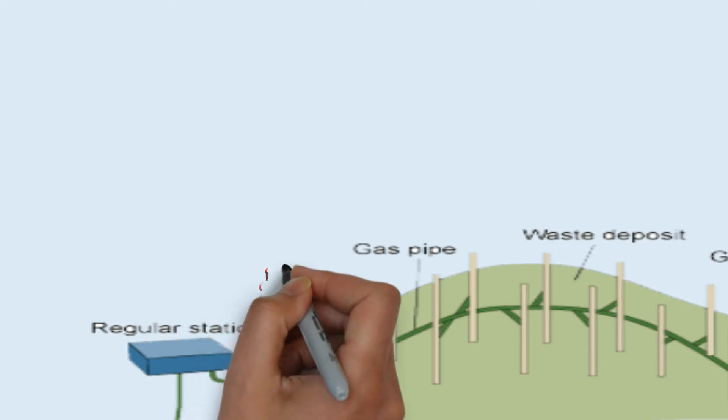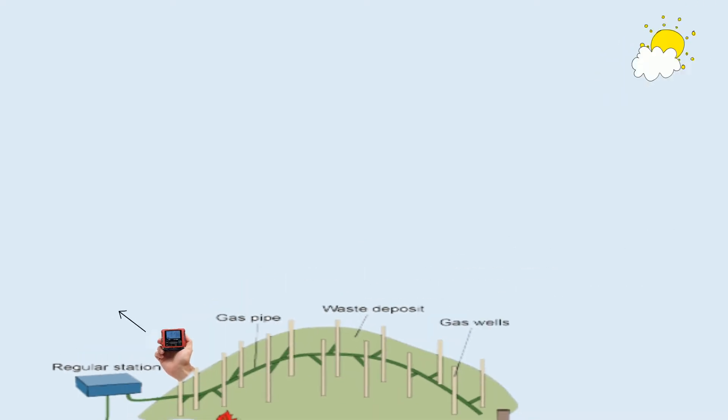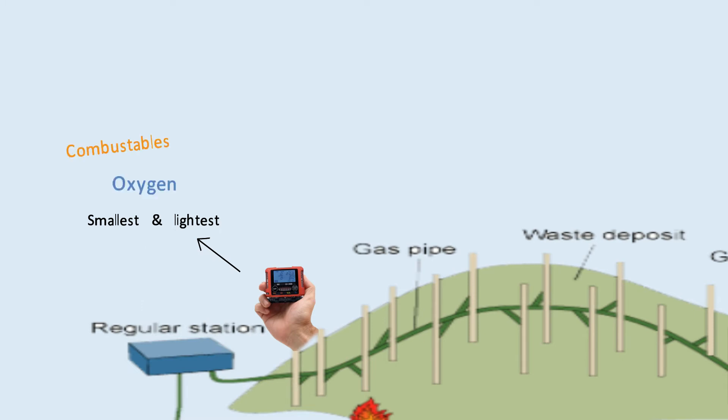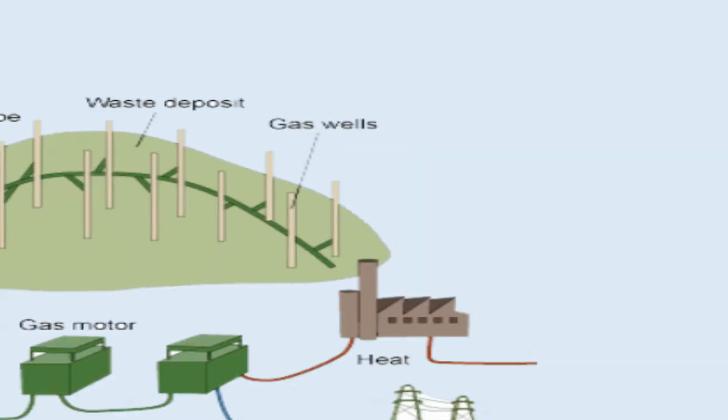RKI Instruments GX2009, the world's smallest and lightest 4-gas personal monitor. It simultaneously displays various gases.